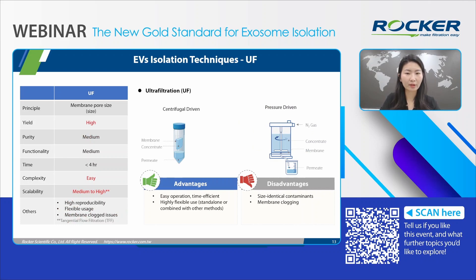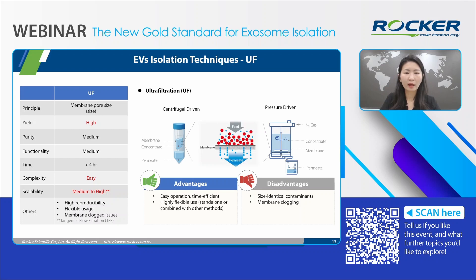The last method is ultrafiltration, UF. UF separates particles by size using a membrane with a defined pore size or molecular weight cutoff, MWCO. Two common setups are centrifugal spin filters and pressure-driven stir cells. UF is a quick and straightforward method that can be used alone or combined with other techniques to enhance purity. However, UF has lower resolution than SEC, making it less effective at removing size-identical contaminants, and membrane clogging is also a challenge. An advanced form of UF is tangential flow filtration, TFF, which can minimize clogging and offers improved scalability and reproducibility.